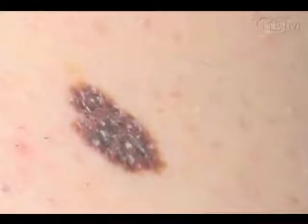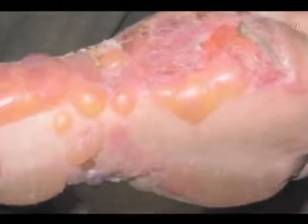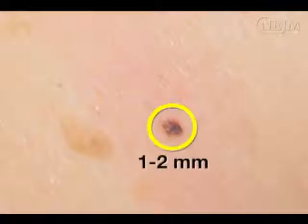Punch biopsy aids in the diagnosis of pigmented lesions and suspected skin cancers, generalized skin eruptions, blistering disease, and vasculitides. While panniculitis may be assessed with the punch biopsy technique, a wedge biopsy is preferred at some centers to ensure adequate sampling of the fat in such lesions. A punch biopsy sample of a pigmented lesion should include one to two millimeters of surrounding normal skin when feasible.